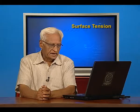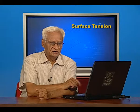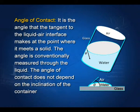Start with the angle of contact. If this is the vessel in which water is contained, this is the water surface, and there is air above it. If I draw a tangent to this surface, then the angle between that tangent and the glass wall is called the angle of contact. It is conventionally measured through the liquid.